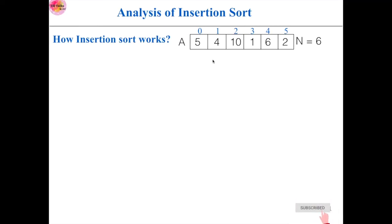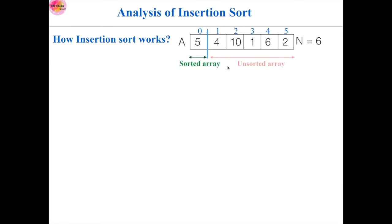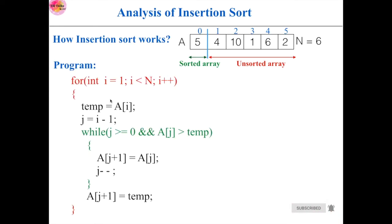Now, let's take this array. Initially, this array will be divided into two parts: one is a sorted array and the other one is an unsorted array. By default, this first element — that is a[0] — will be considered as the sorted array and the rest of the elements will be considered as the unsorted array. It will take the elements one by one from the unsorted array and compare them with the elements of the sorted array until a correct position is found for that particular element. This is the program for insertion sort. This outer loop is for the unsorted array and this inner loop is for the sorted array.